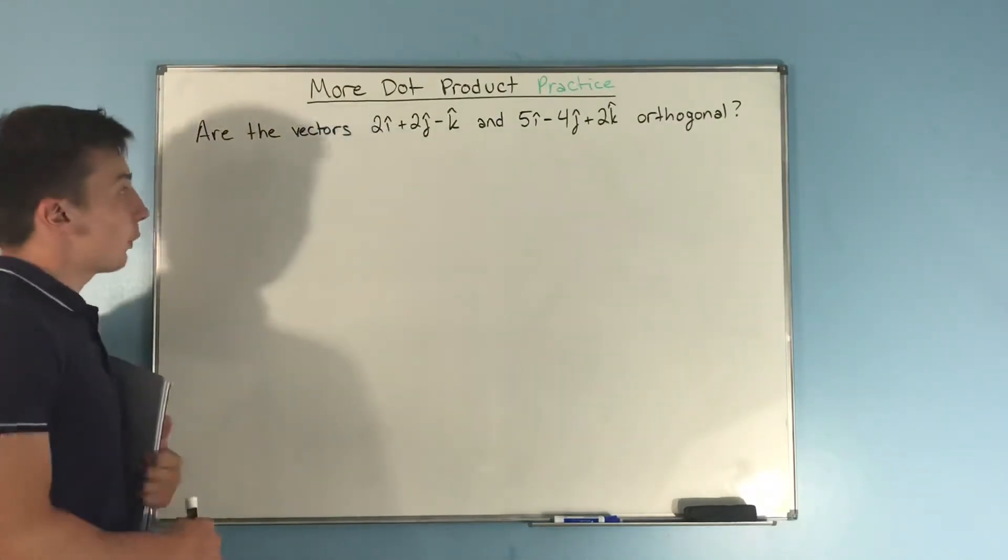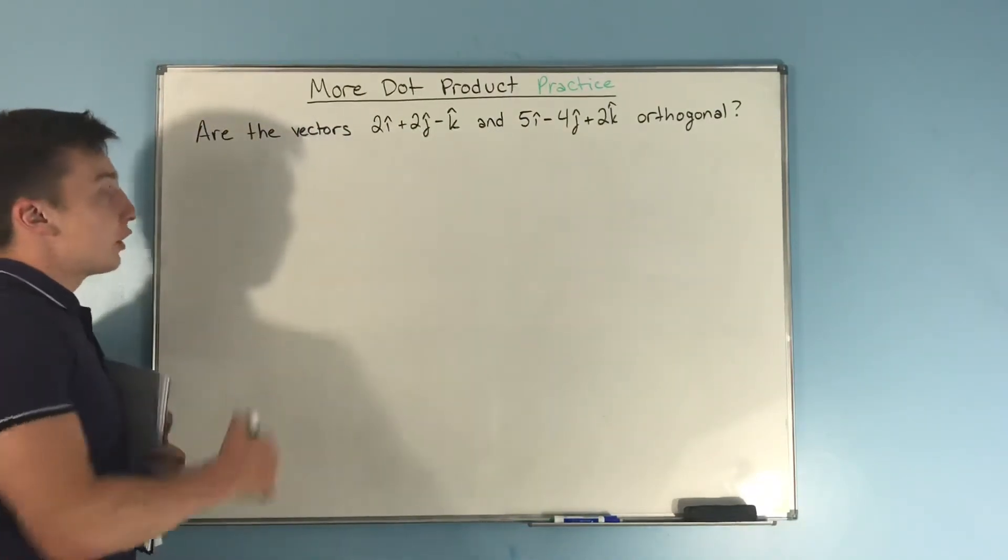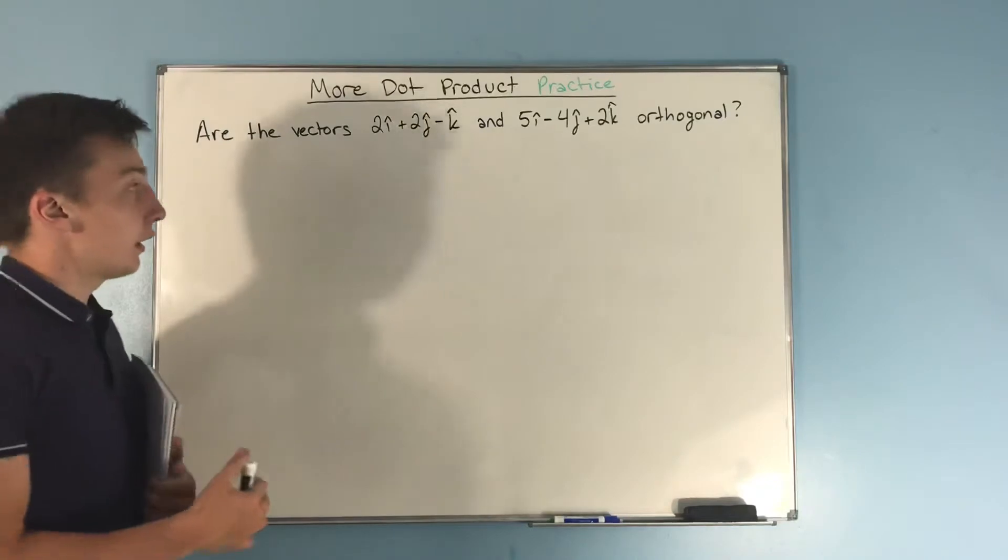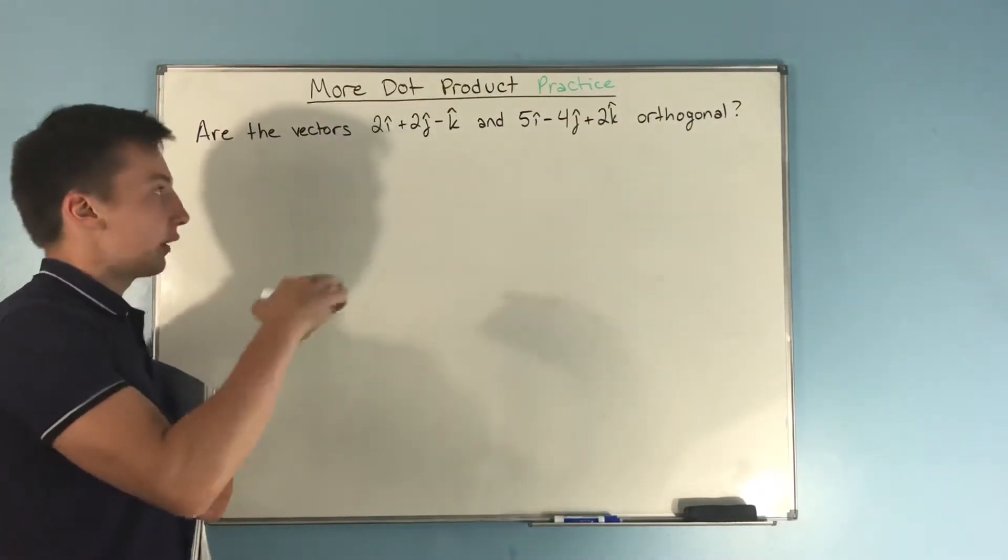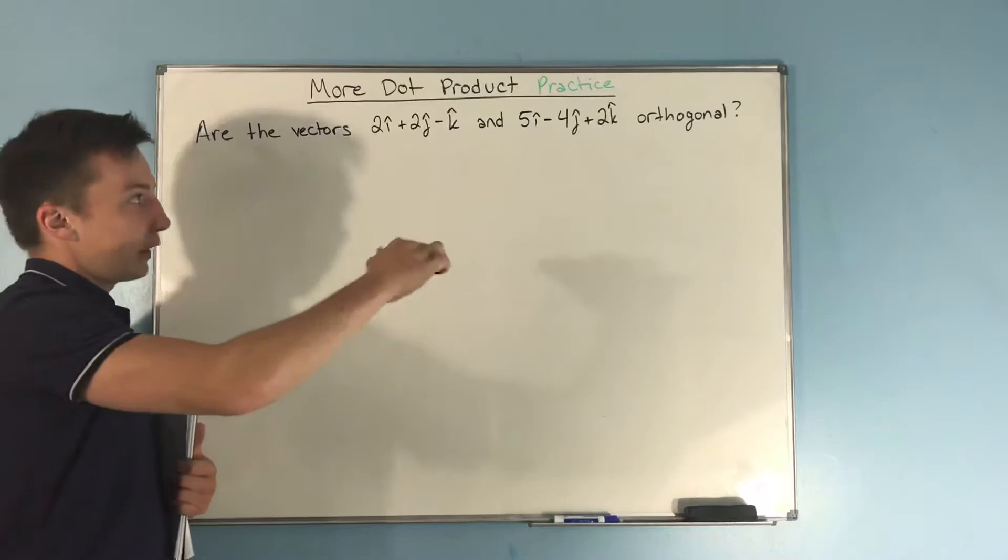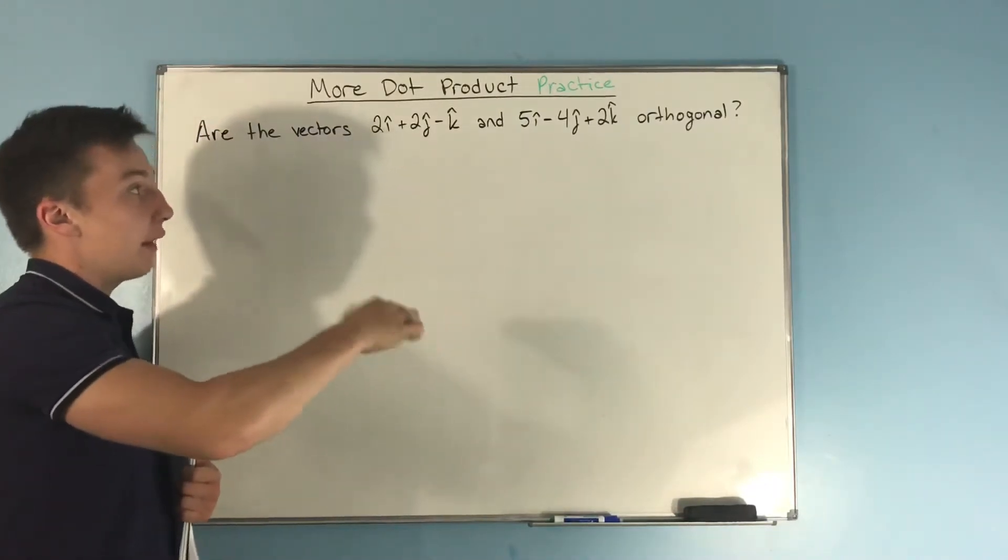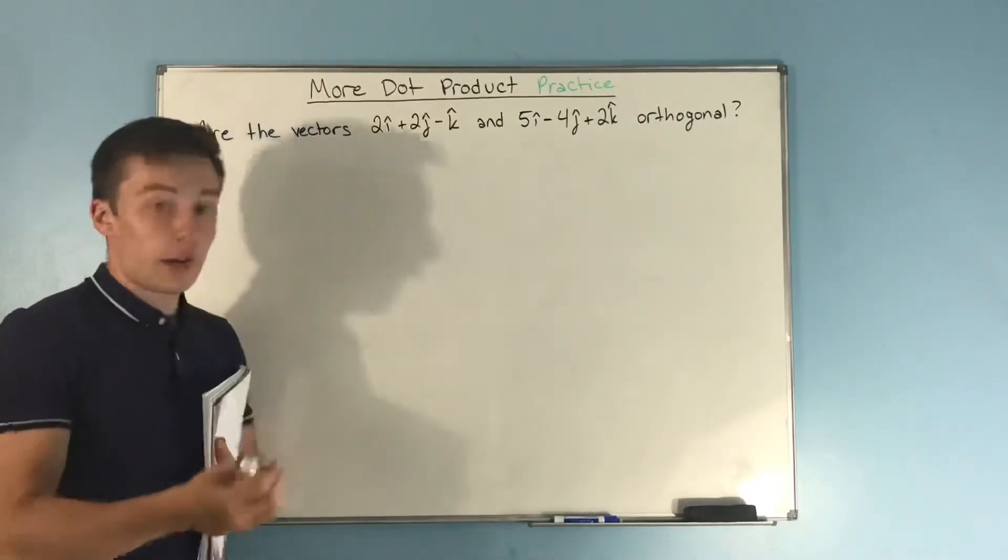Next question, we want to see if the vectors 2i plus 2j minus k, and 5, I guess I should say i hat rather than i, 5i hat minus 4j hat plus 2k hat, we want to see if those vectors are orthogonal.